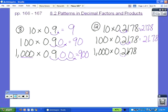When we multiply by 1000, we move the decimal three places. Our product is 217 and 8 tenths.